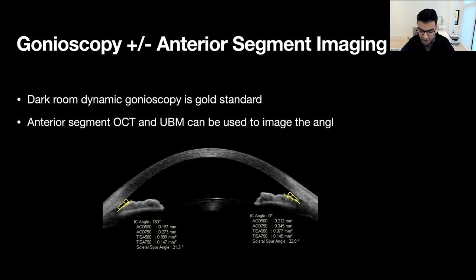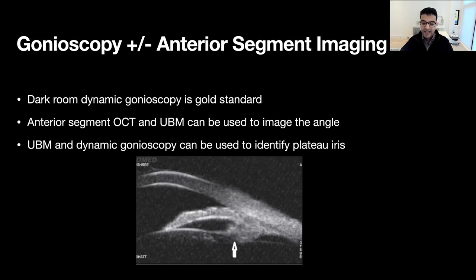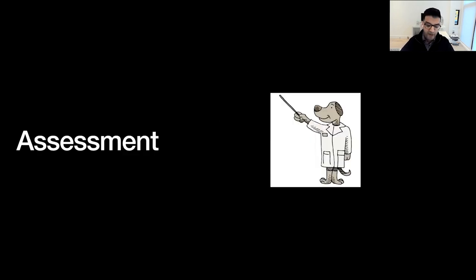With the increasing use of artificial intelligence, progression in imaging will continue to improve, but we should always confirm our assessments aided by technology. For mechanisms like pupil block and lens rise, anterior segment OCT will adequately image the relevant anatomy. However, if we are assessing plateau iris, we need ultrasound imaging to visualize the ciliary body, as anterior segment OCT does not have the required penetration to visualize it. Dynamic gonioscopy remains the gold standard and is the only modality that can formally diagnose angle closure and its constituent mechanisms.